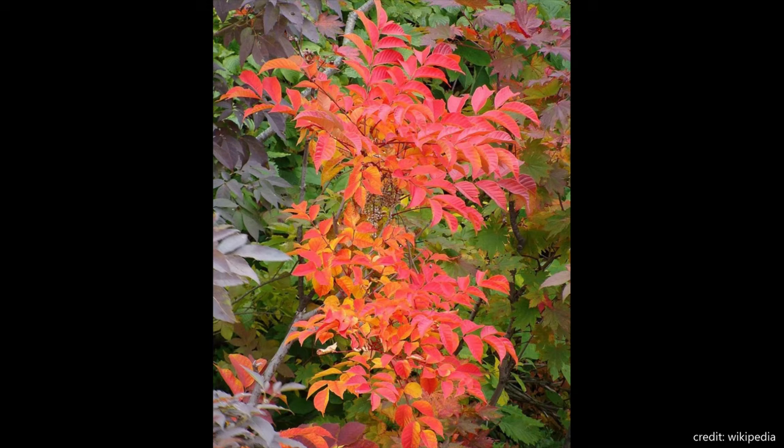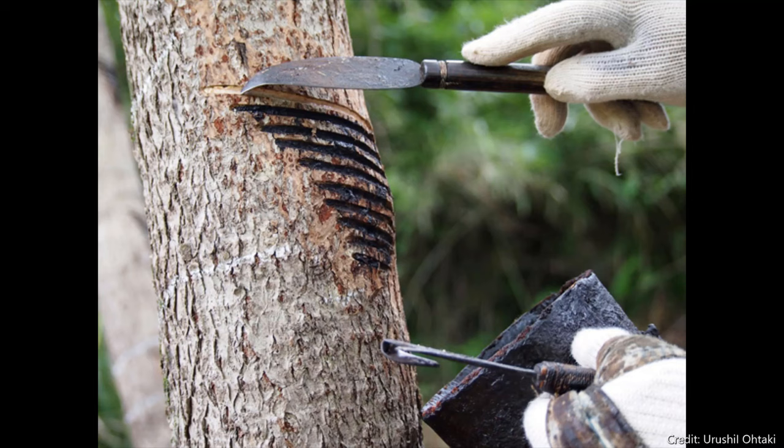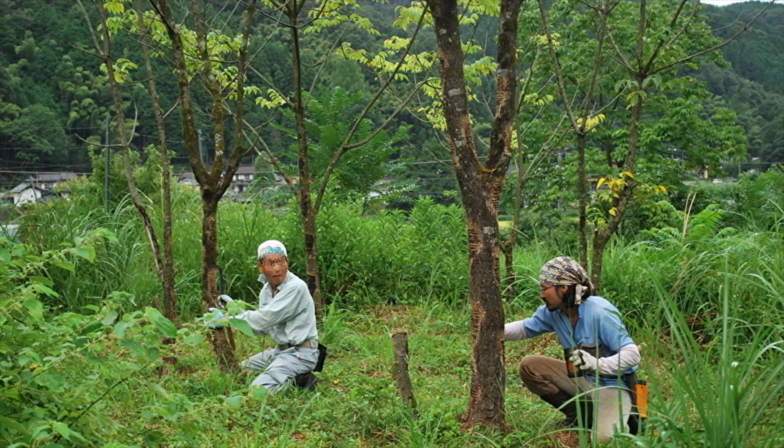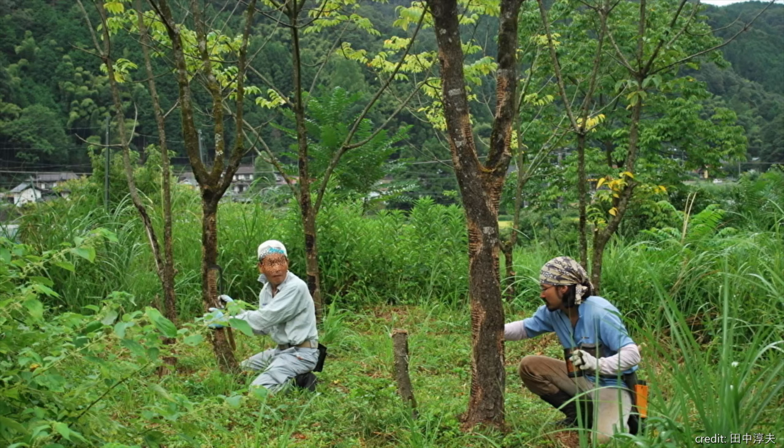Urushi lacquer is the tree sap from the lacquer tree. The scientific name of the tree is Toxicodendron vernicifluum. The tree is originated in Japan, China, and Korea. The farmer cuts the bark and collects the tree sap, and those are raw Urushi.